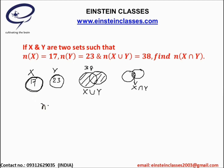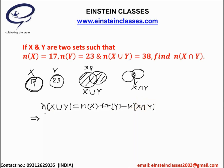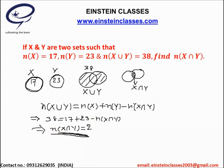We can write: number of elements of X union Y equals number of elements in set X plus number of elements in set Y minus number of elements in the common part, that means X intersection Y. As the total number of elements in X union Y is 38, this equals 17 plus 23 minus the number of elements in X intersection Y. From basic calculation, the number of elements in X intersection Y is equal to 2.